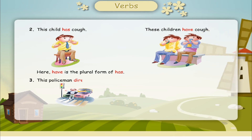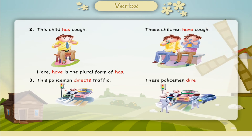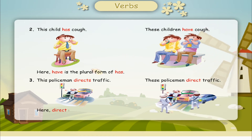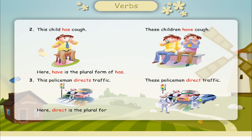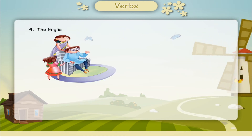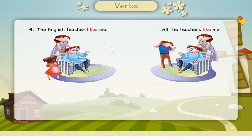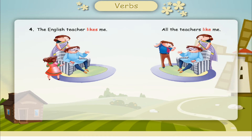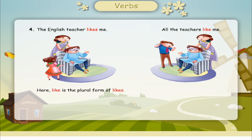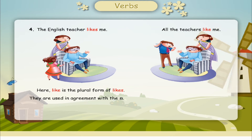This policeman directs traffic. These policemen direct traffic. Here, direct is the plural form of directs. The English teacher likes me. All the teachers like me. Here, like is the plural form of likes. They are used in agreement with the subjects.